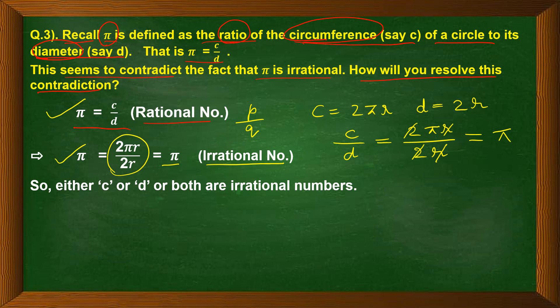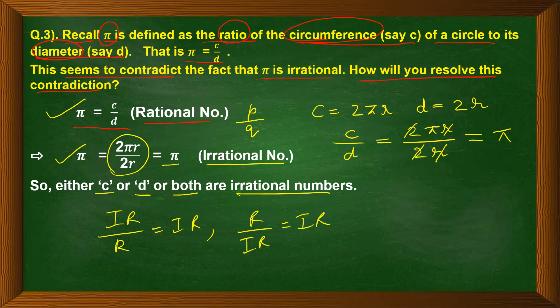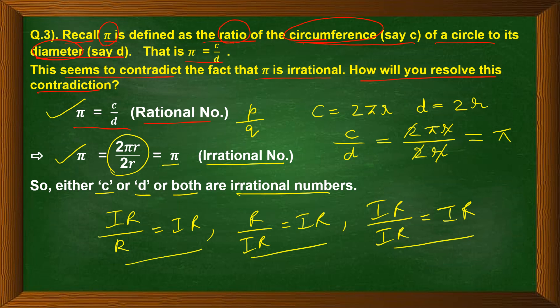So on one hand we say π is rational because it is written as C/D (form p by q), but on the other hand π is irrational because its decimal expansion is non-terminating and non-repeating. The resolution is that either C or D or both are irrational numbers. Dividing an irrational by a rational, a rational by an irrational, or an irrational by an irrational all yield an irrational number — so π is indeed irrational.